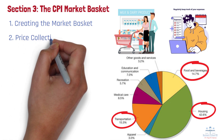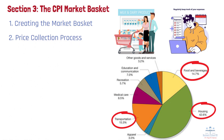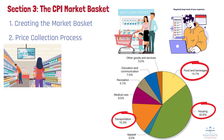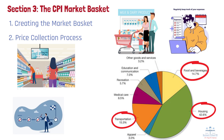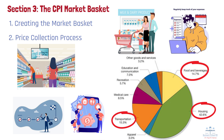Number 2: Price Collection Process. Hundreds of BLS employees become price detectives. They visit 23,000 stores across 87 different cities and record prices every single month. They even track the same items in the same stores to ensure consistency. Each price then gets weighted based on how important it is in the typical family's budget.